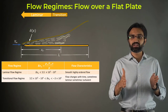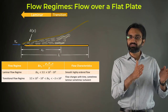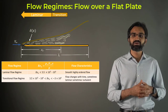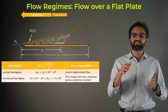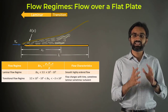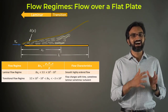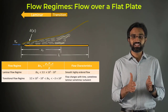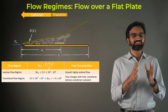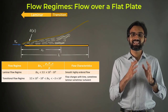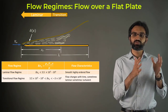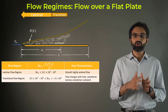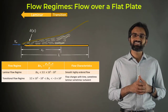As the fluid flows further downstream away from the leading edge, the flow becomes unsteady due to small disturbances in the boundary layer, sometimes exhibiting laminar characteristics and other times turbulent. This region is often referred to as the transitional region, and the characteristic Reynolds number ranges between 3.5 × 10⁵ to approximately 3 × 10⁶.